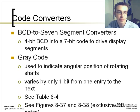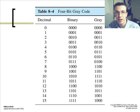This code is sometimes gray code. This is used to indicate angular position of rotating shafts. It varies by one bit from one entry to the next. This is a table of the conversion from decimal to binary to gray code. You can see the decimal value 10 in binary is 1, 0, 1, 0.